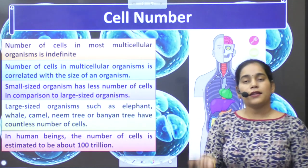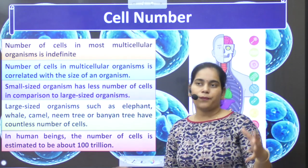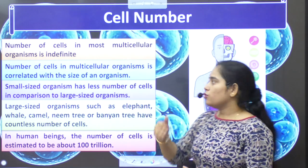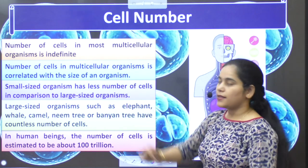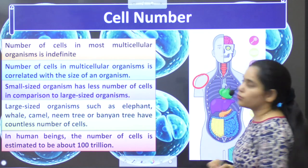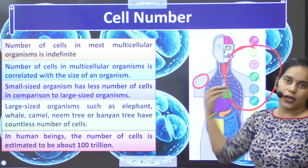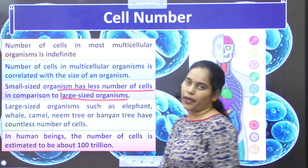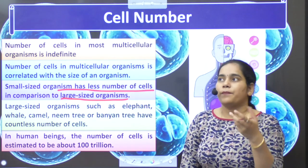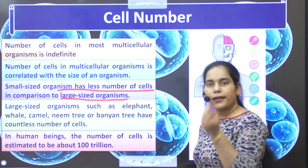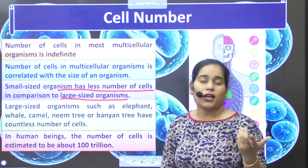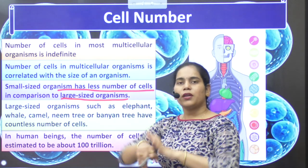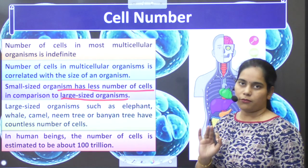The size of the organism depends on the number of cells. A whale is a very big fish; an elephant is a big animal; a banyan tree and a neem tree are big plants, while some plants are small. All these have different sizes, and with different sizes, there is a variation in the number of cells. Small organisms like mice, rabbits, insects, and reptiles have fewer cells, while large organisms like horses, bulls, humans, trees, and whales have far more.